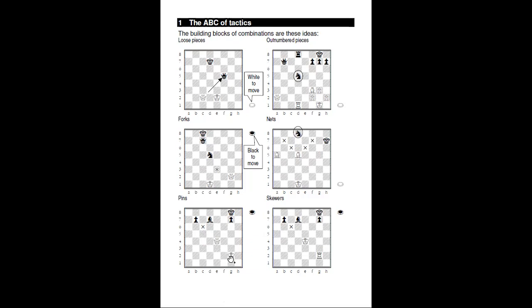In the pin example, the black bishop from d7 to c6 pins the queen to the king — the queen cannot move because it would expose the king to check. The best white can do is play queen takes bishop, pawn takes queen, and black has gained nine and lost three — a great trade. In the skewer diagram, after bishop to c6 check, the king must move and then bishop takes rook — black has gained a whole rook.